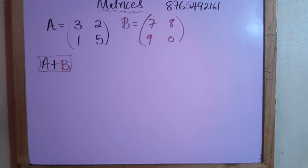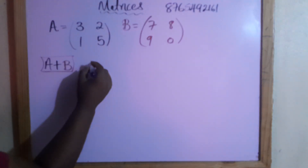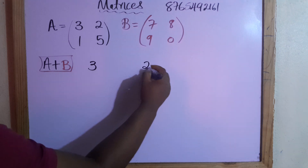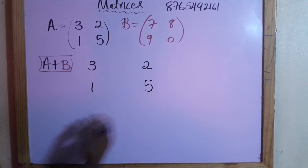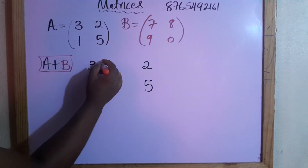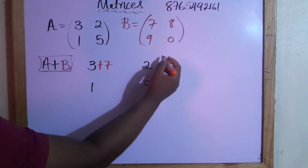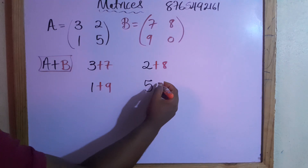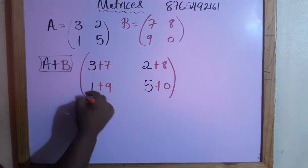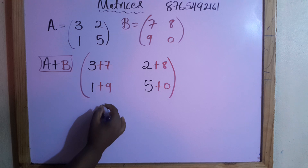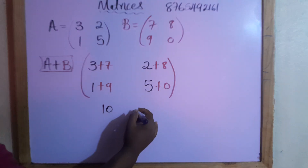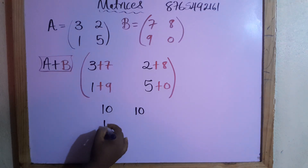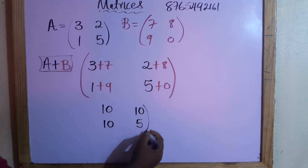One of the things required in your CXC exam is to add matrices. We're going to add A plus B. It's very simple — we add matching corresponding positions. So three matches with seven, two matches with eight, five matches with zero. That gives us: three plus seven is ten, two plus eight is ten, one plus nine is ten, and five plus zero is five.